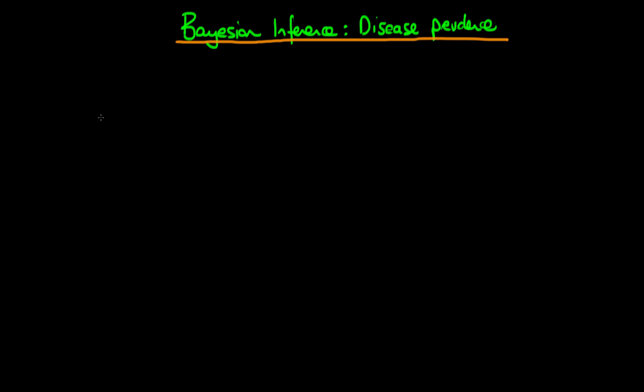In this video I want to go through an example of applied Bayesian inference, and the example we're going to be talking about is disease prevalence within a population. So we suppose that we've got some population and within that population there is a certain fraction of people who actually have this particular disease, and the parameter which governs this probability is what we call theta.